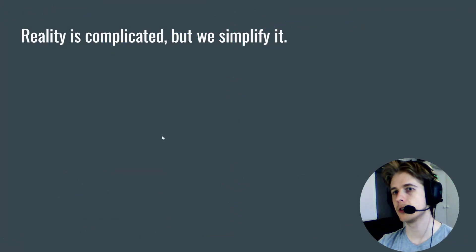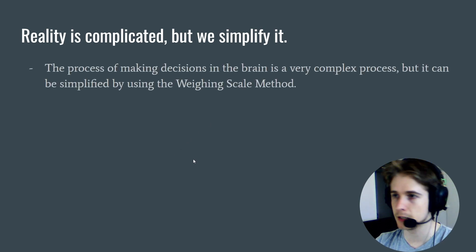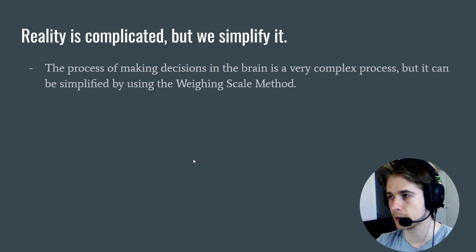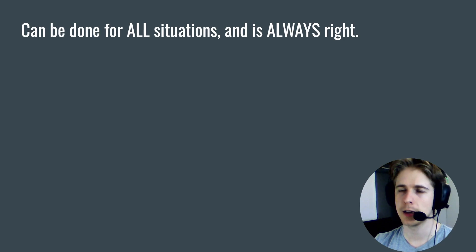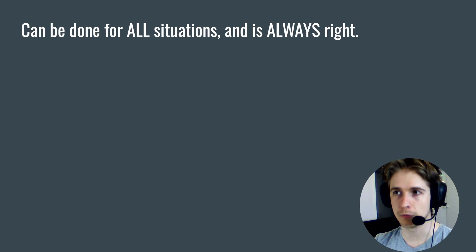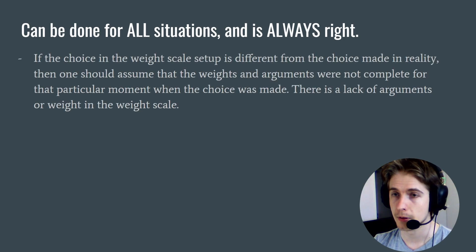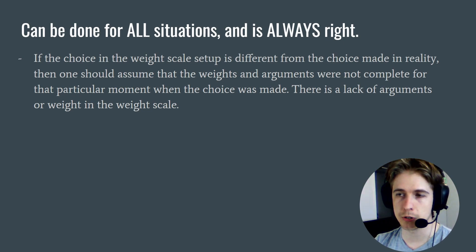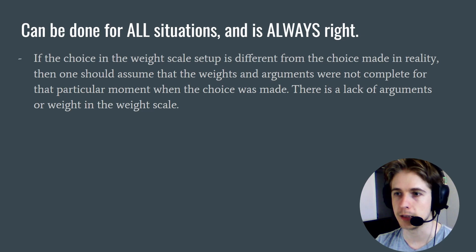Just to quickly mention — reality is complicated, but we simplify it. The process of making decisions in the brain is a very complex process, but it can be simplified by using the weighing scale method. In the method, it is assumed that it can be applied to all situations and that it is always right. If the choice in the weight scale setup is different from the choice made in reality, then one should assume that the weights and arguments were not complete for that particular moment when the choice was made — there is a lack of arguments or weight in the scale.